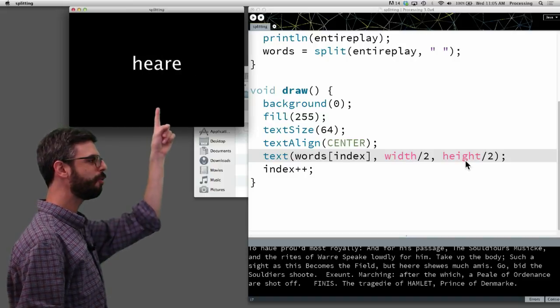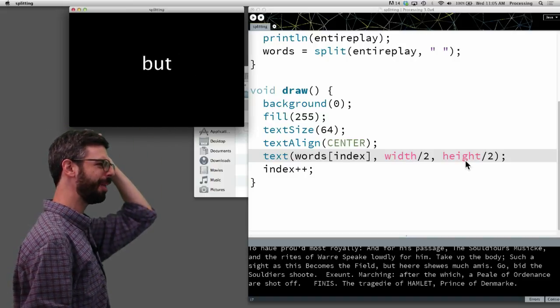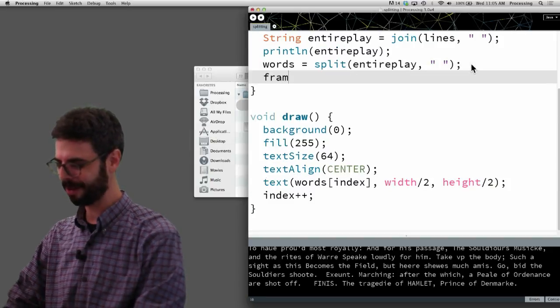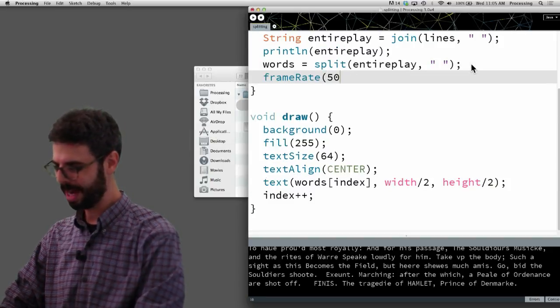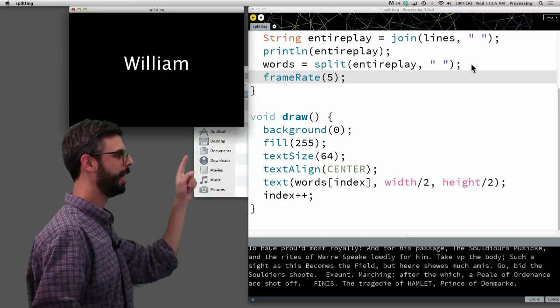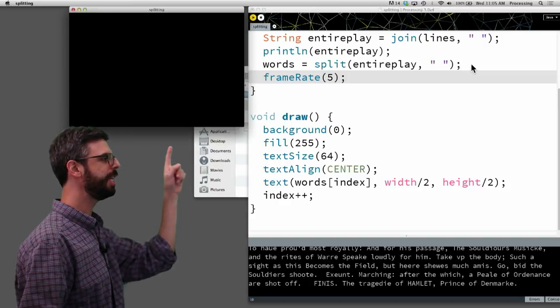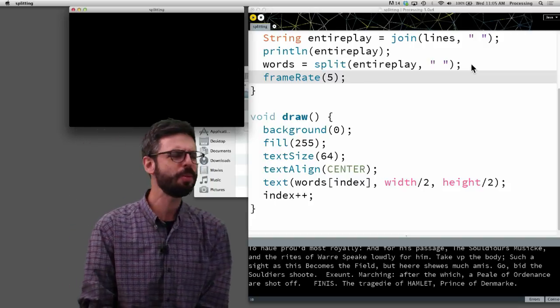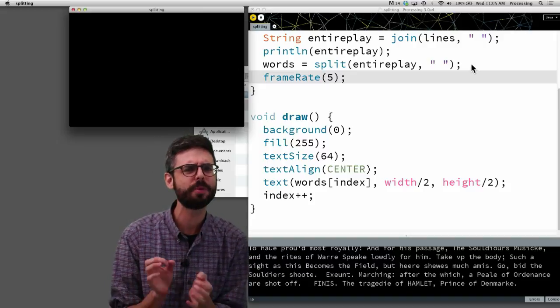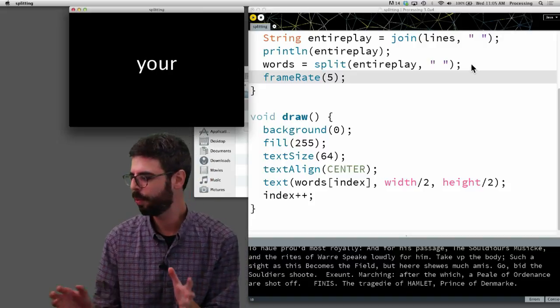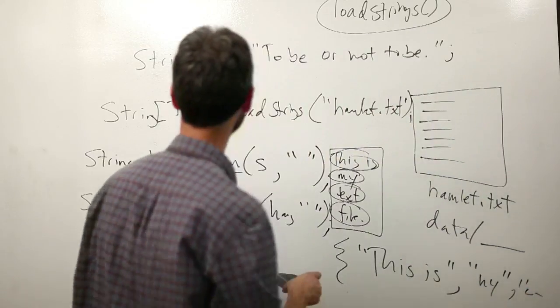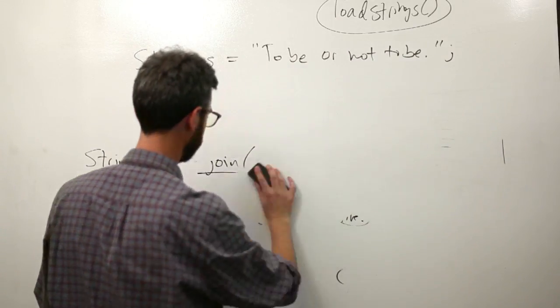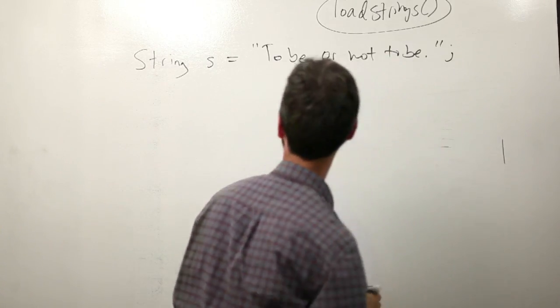So index is zero, draw the first word. Index goes up by one, draw the second word. And we don't need, this location can just be, we can draw all these words in the middle of the window. So here we go. We can see, look, this is every word in the play. Now you'll notice something. Let's slow this down. Let's just say frame rate 5. If we slow this down, you can see that there's question marks and apostrophes and colons. And we don't really want that.